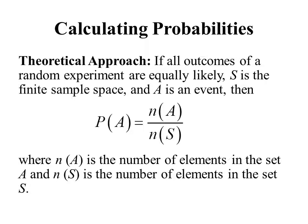Another approach is what we call the theoretical approach. If all outcomes of the random experiment are equally likely, S is the finite sample space, and A is an event, then the probability of A equals N(A) divided by N(S), where N(A) and N(S) are the number of elements in those sets A and S respectively. This gives us an exact value — not an approximation. But there are two important qualifiers: all outcomes have to be equally likely, and the sample space has to be finite. If either condition is not met, we can't use this approach.